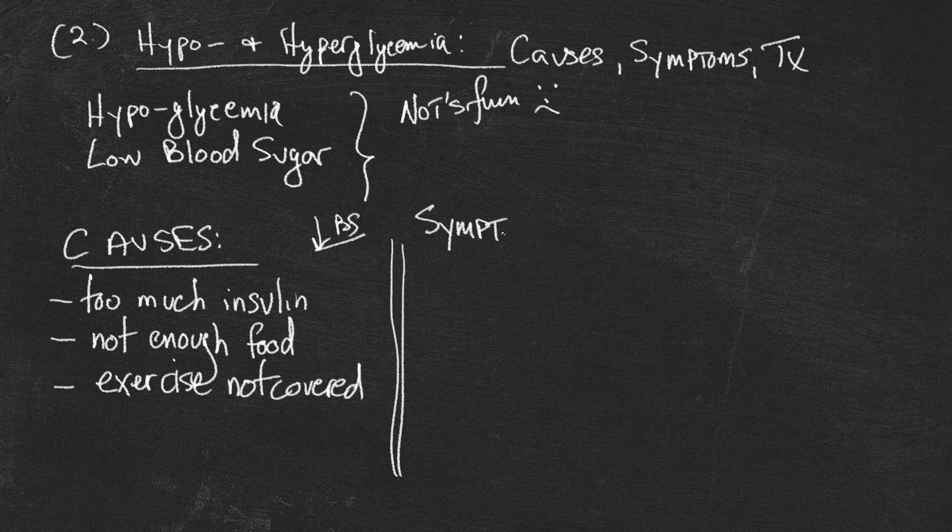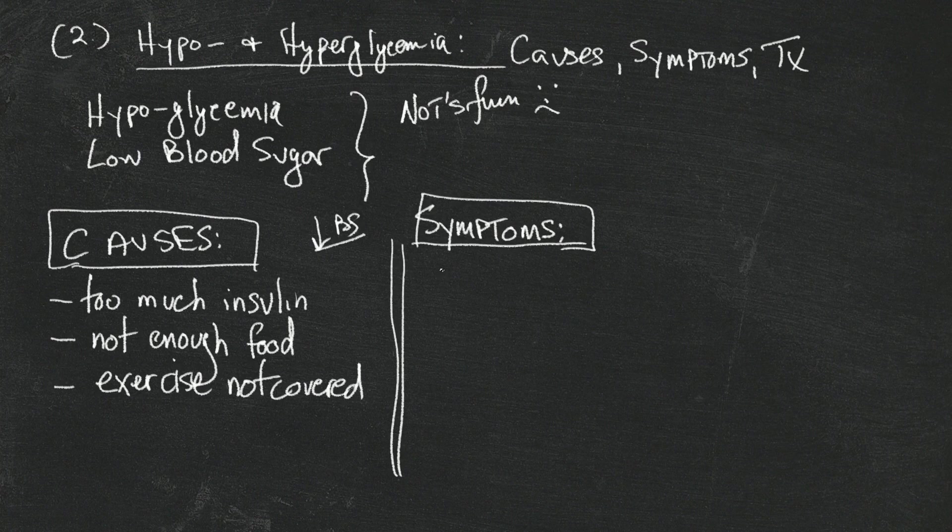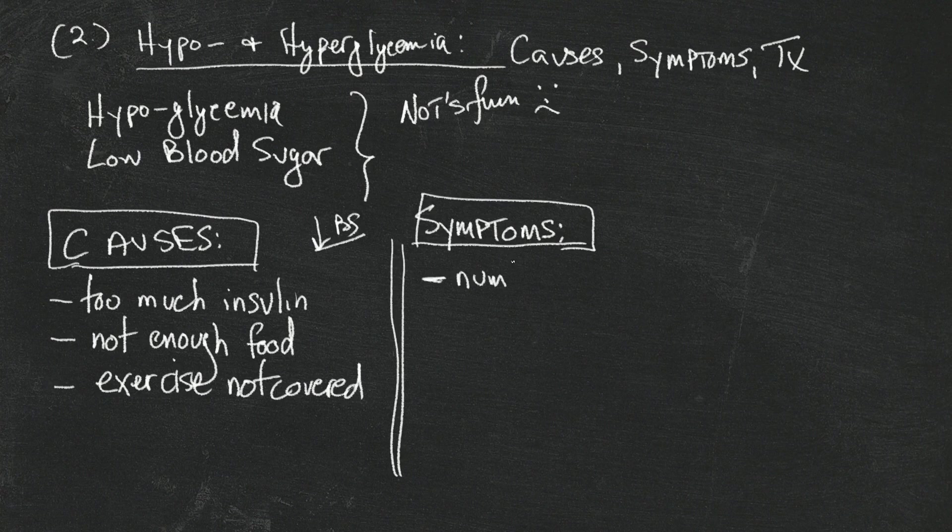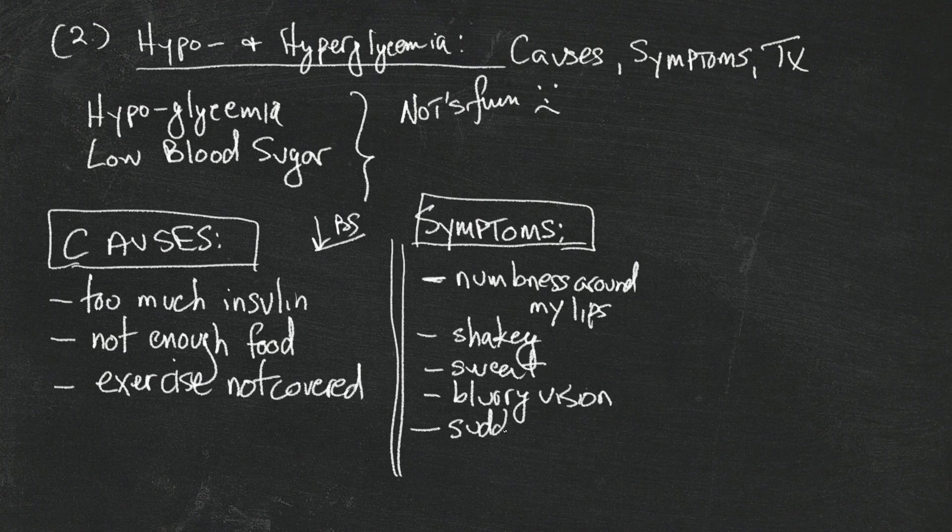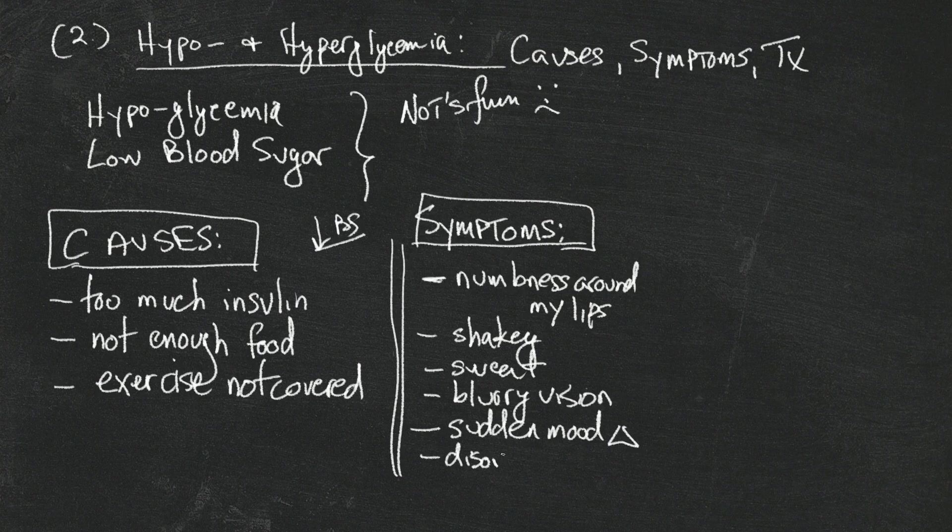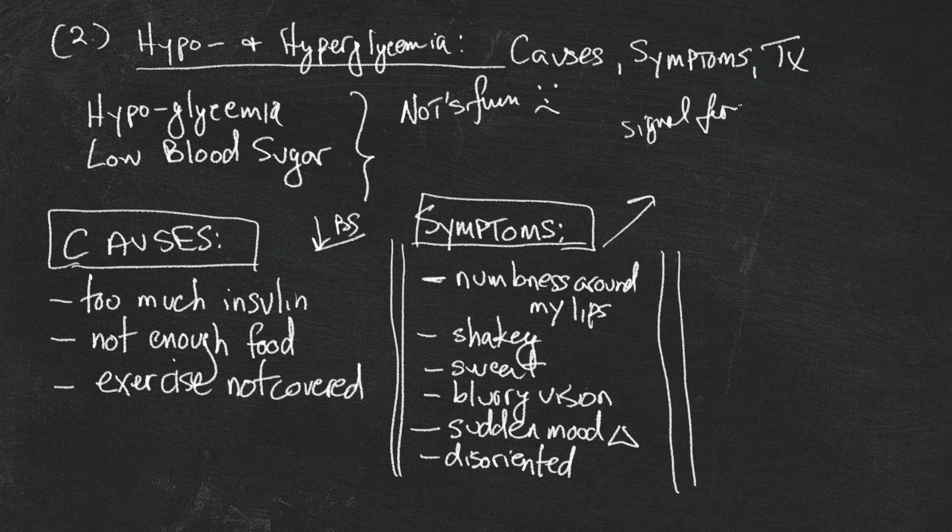What are the symptoms? Well, those vary from person to person and they can even change over time. When I first got diagnosed, I used to have a lot of feelings of numbness around my lips. Some people feel shaky, other people sweat, some people get blurry vision, little kids have a sudden change of mood, and you could become disoriented.